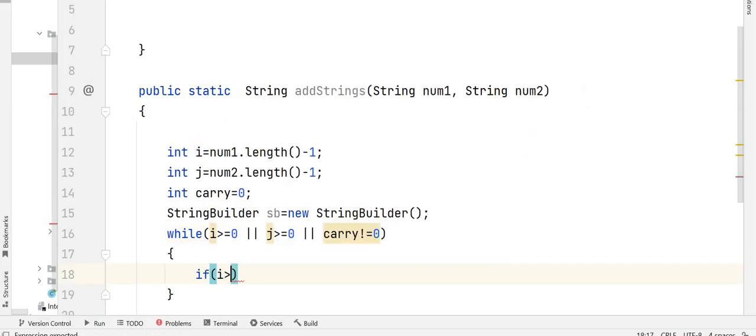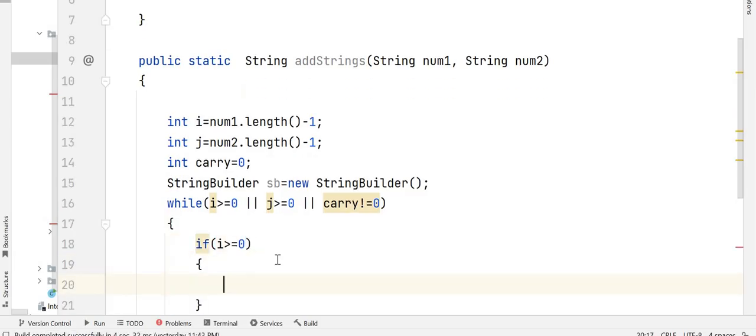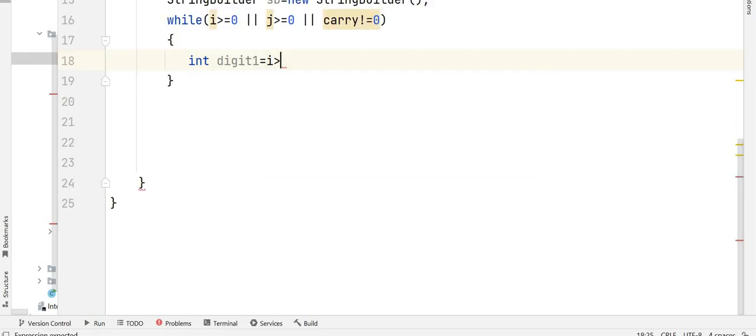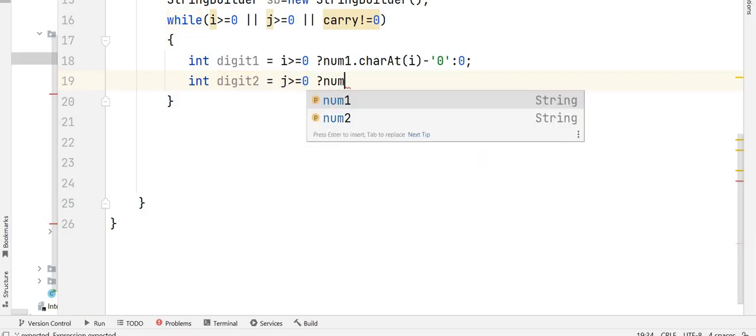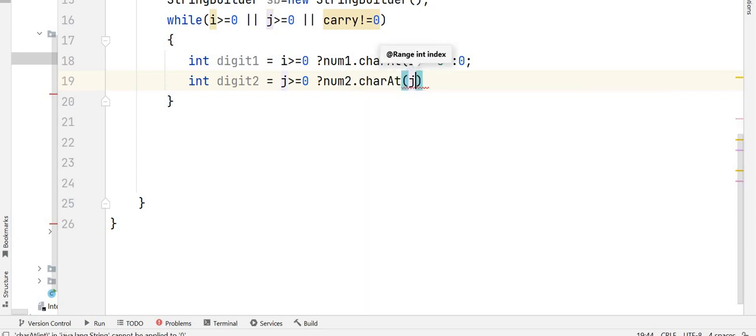Firstly, we need to check if i is greater than equals to 0 that means digit 1 is present. If i is greater than equals to 0 then your digit would be num1.charAt(i) minus '0'. And what would be your digit 2? If j is greater than equals to 0 then it would be num2.charAt(j) minus '0'. Otherwise it would be 0.